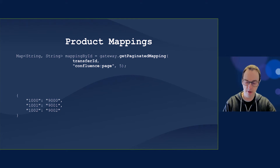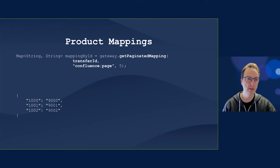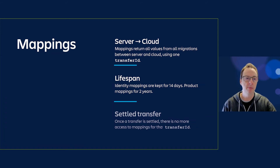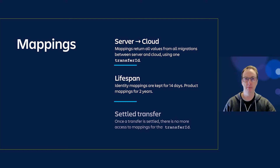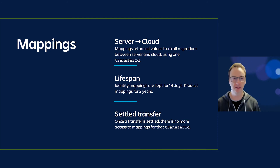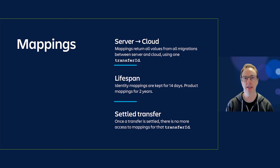You have access to these mappings in both server and cloud, so you can pre-process your data in server or post-process the data in cloud. It's important to understand that identity mappings are kept for 14 days for GDPR requirements, while product mappings are kept for two years. Once a transfer is settled — whether successful, incomplete, failed, or timed out — there's no more access to mappings for that transfer ID.